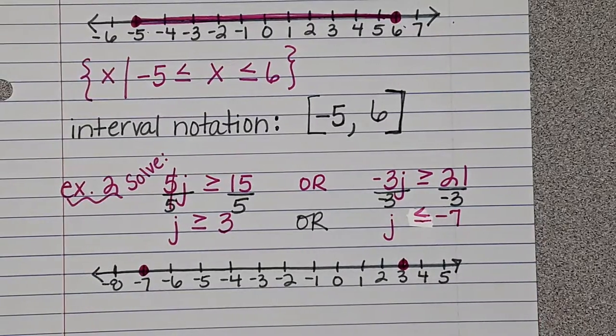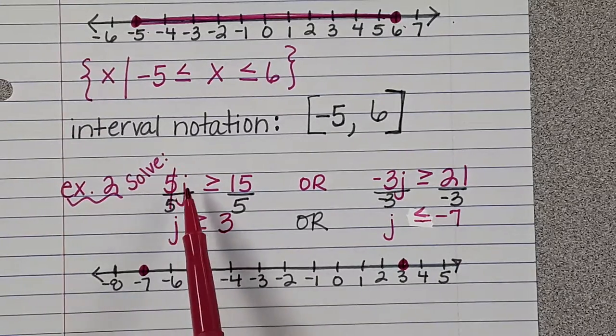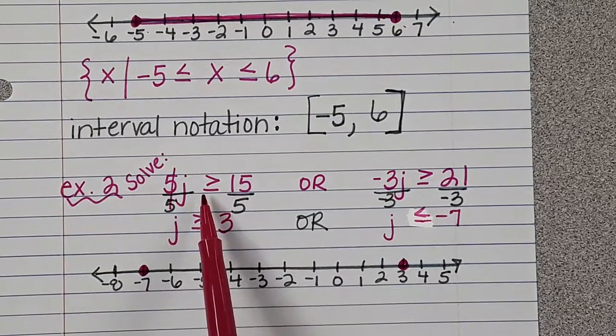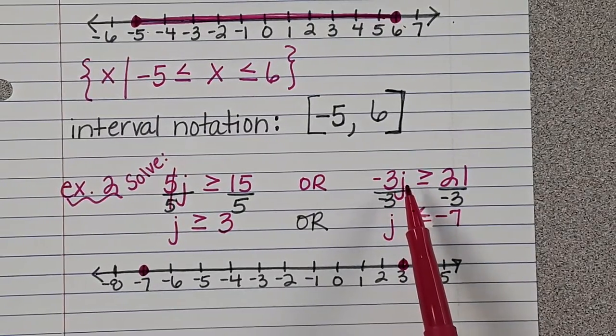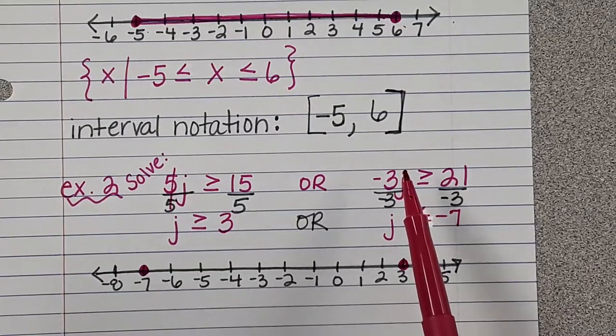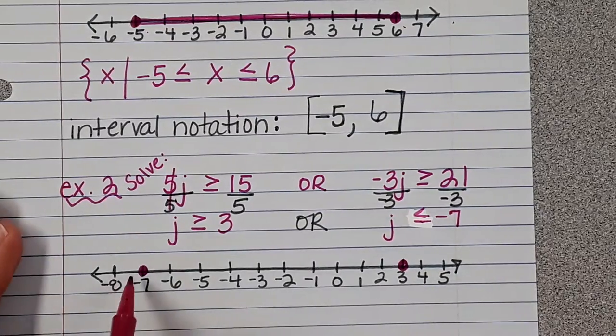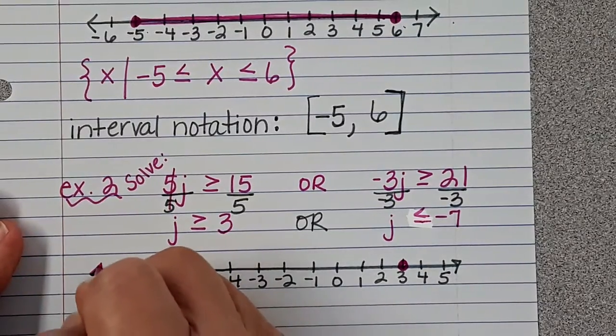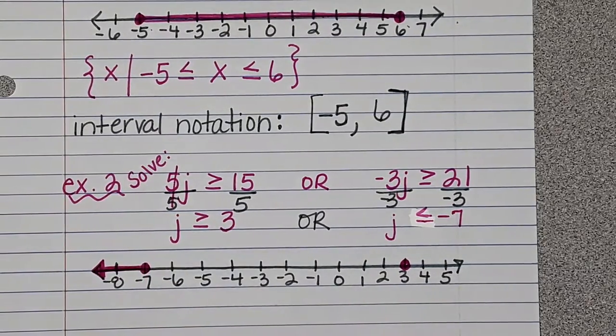When you have an or, one of them has to be true. So let's just try negative 10. What is five times negative 10? Negative 50. Is negative 50 greater than or equal to 15? No. Let's plug in negative 10 over here. What's negative three times negative 10? It's positive 30. Is 30 greater than or equal to 21? Oh, so I can shade here. Notice that one was true. That's all I care about. When there's an or, one of them has to be true. Zero made them both false. I can't shade there.